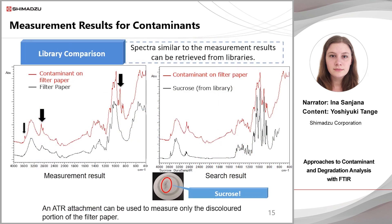These graphs show the results of measuring a contaminant on filter paper. The spectrum of the discoloured area of the filter paper is compared to the spectrum of clean filter paper. The arrows indicate differences — these peaks are not present in the normal filter paper spectrum. By searching in the library, a match was found and the contaminant was identified as sucrose.